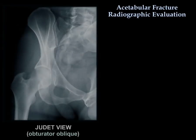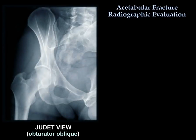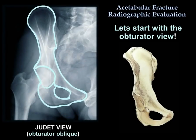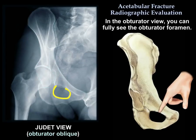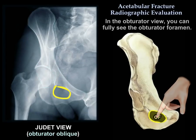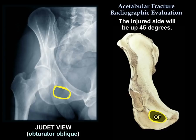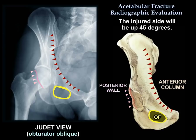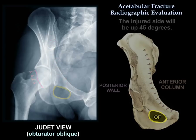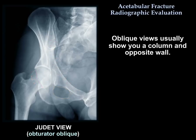Regarding the oblique Judet views, let's start with the obturator view. In the obturator view, you see the obturator foramen fully, with the injured side rotated up 45 degrees. It will show you the anterior column and the posterior wall. In general, the oblique views show you a column and the opposite wall.